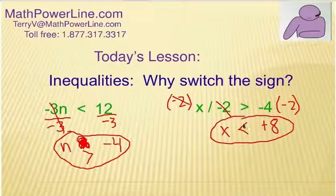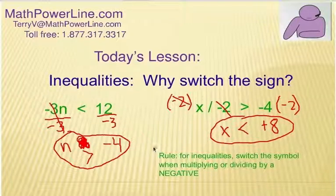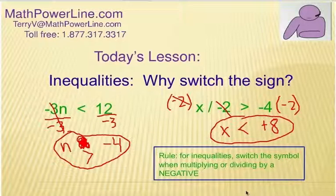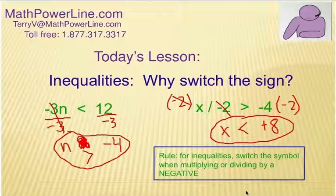Well, in these two cases, yes, we did have to switch the inequality symbol. So the rule is, for inequalities, switch the symbol when multiplying or dividing by a negative. All right, well, that's an example of when you use the rule. Let's take a look at why. Why does this rule work and that you have to kind of memorize it and use it in your inequalities?